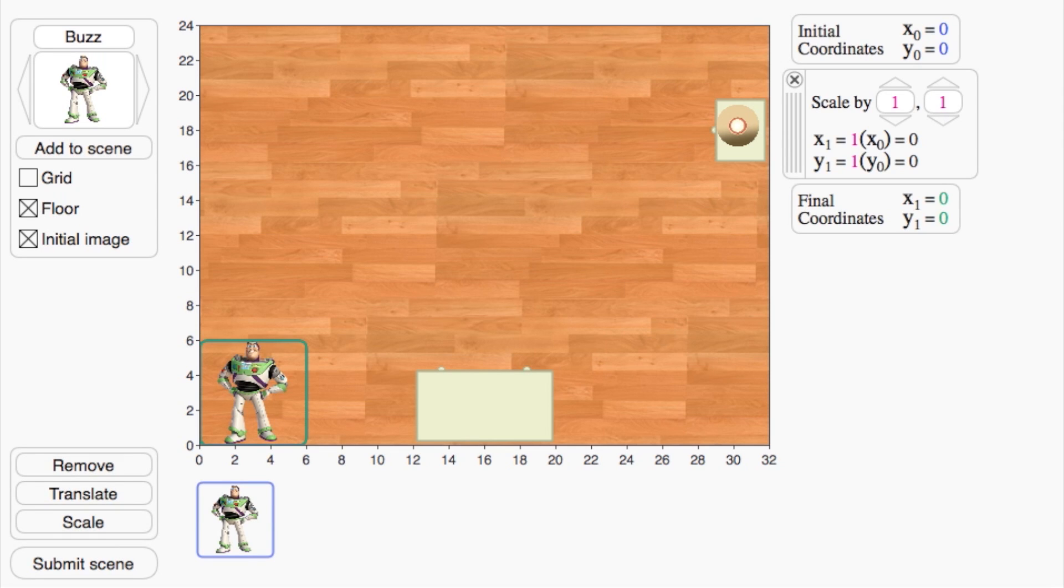We can change the size of Buzz, say, making him twice as big, by using the scaling operation. To scale the object to twice its initial size, I have to multiply the coordinates of each point in the object by a factor of two.